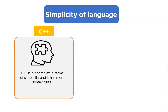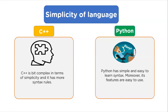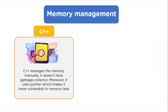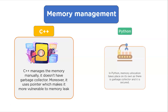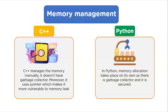Coming to simplicity of language: C++ is a bit complex and has more syntax rules and program conventions. Python has simple, easy-to-learn syntax and its features are easy to use, allowing developers to write short and readable code. Moving on to memory management: in C++, memory management takes place manually as there is no garbage collector, and it uses pointers which makes it more vulnerable to memory leaks. Python provides automatic memory management through its garbage collector.